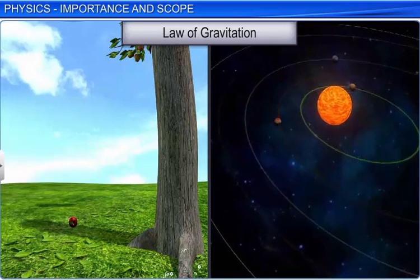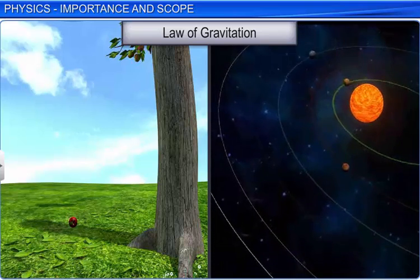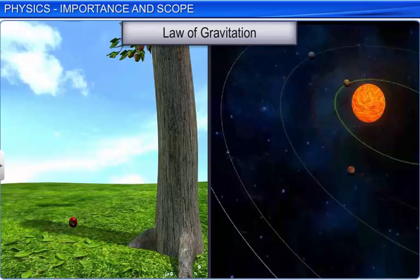Thus, we derive the properties of bigger or more complex system from the properties or interaction of the simpler parts or constituents of the system. This approach is called reductionism and helps in understanding the properties of complex systems in physics like functioning of satellites.